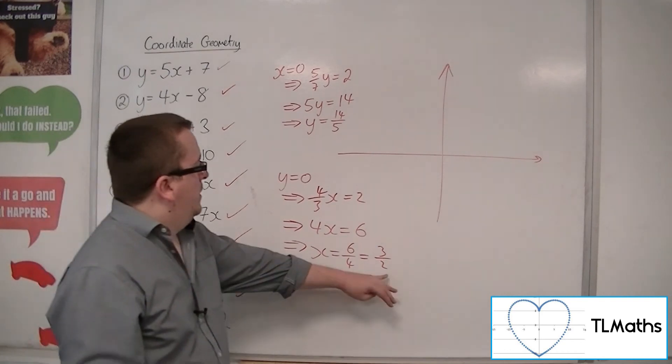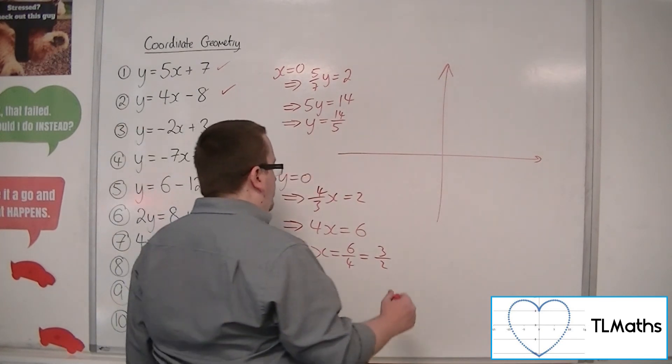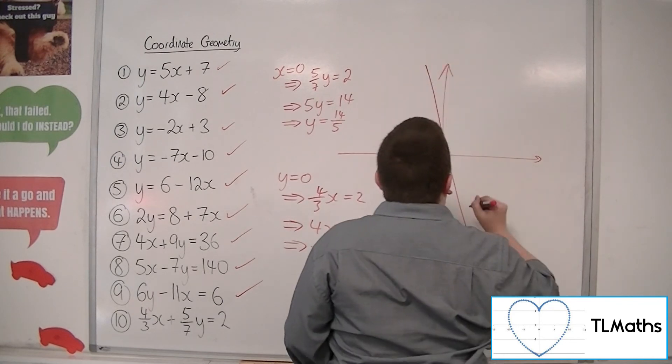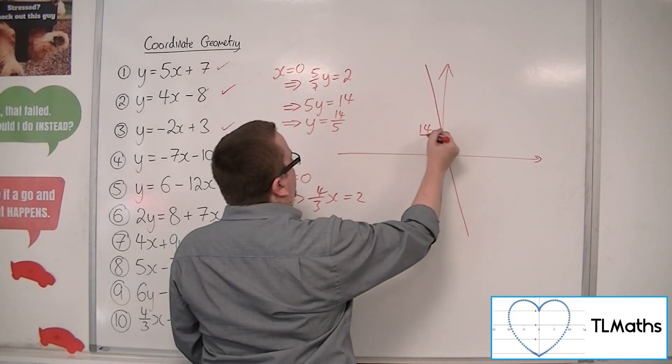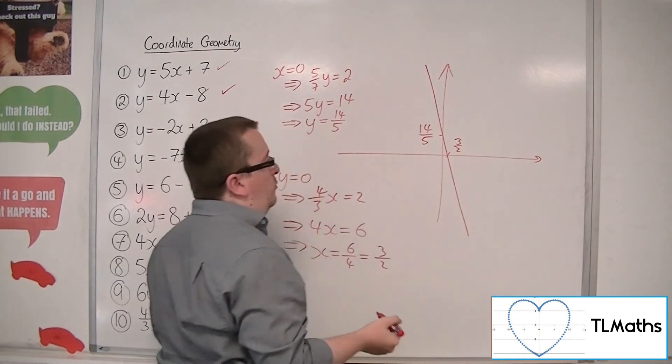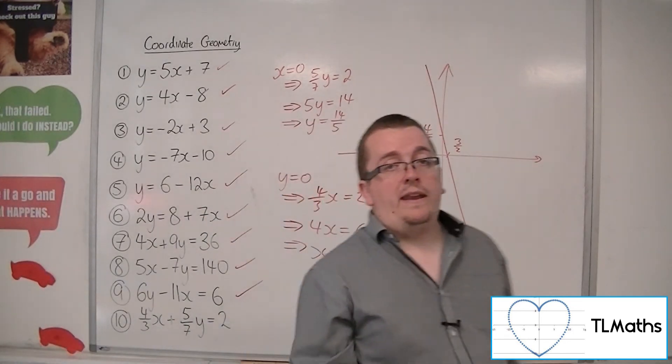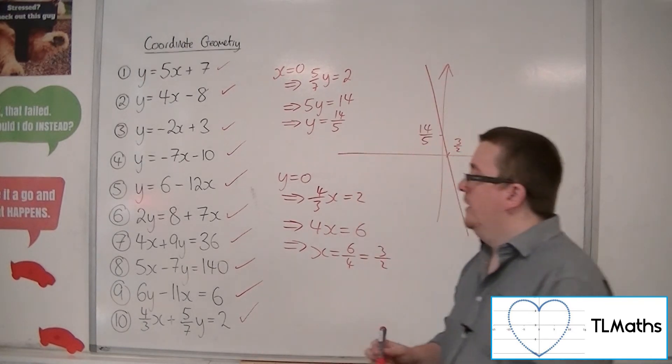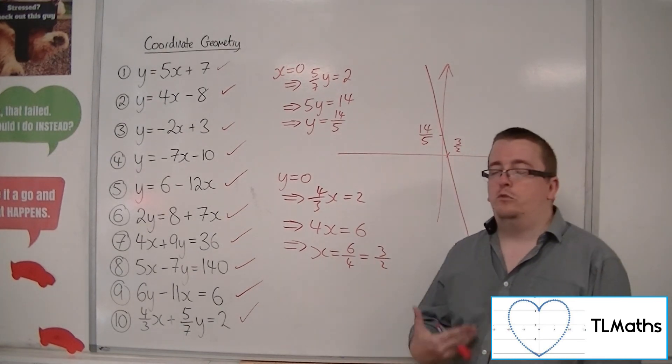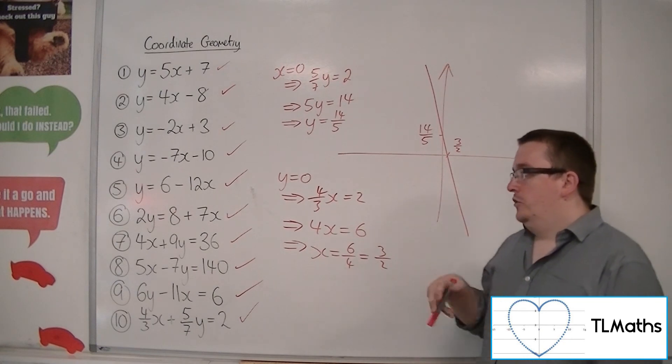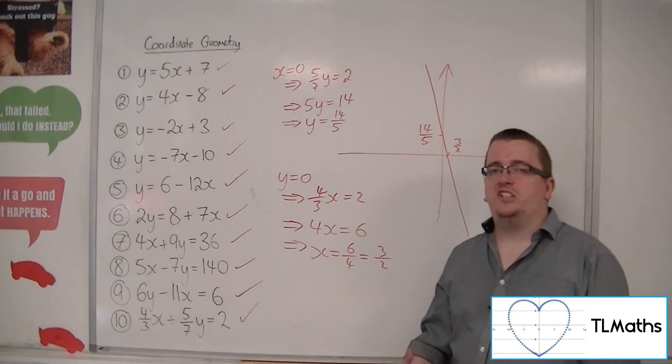Okay. So 3 halves is 1.5. 14 fifths is 2.8. So it's got something like that. That wasn't particularly good. But there you are. I mean, it's clear, isn't it? So 14 fifths on the y and 3 halves on the x. I almost missed it. Okay. So that is how you would do number 10. And that's how you can sketch straight line equations. You really want to get into the habit of keeping on trying them, checking them via Desmos or Autograph or Geogebra. And just keep on checking and trying these out just so that you can kind of get used to sketching them reasonably quickly.